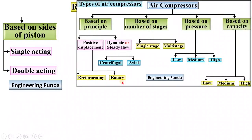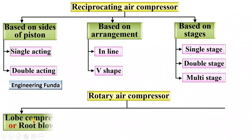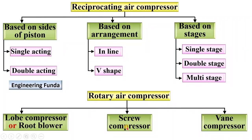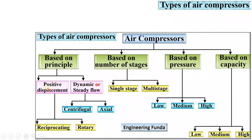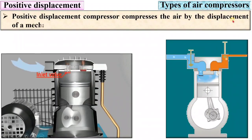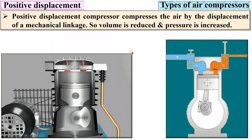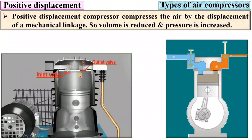Rotary compressors are also classified as loop compressor or root blower, screw compressor, and vane compressor. Now let us see all types of compressor briefly. Starting with positive displacement compressor: it compresses air by the displacement of a mechanical linkage, so the volume is reduced and pressure is increased.